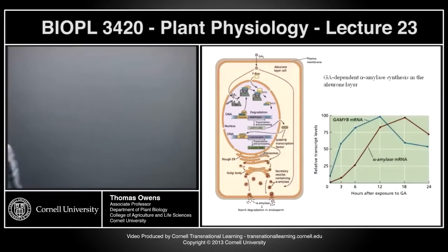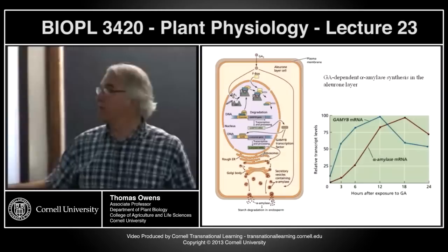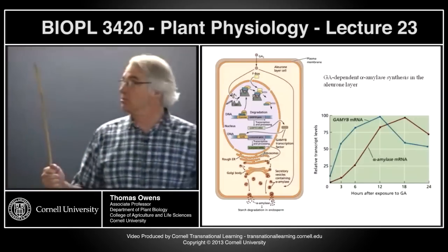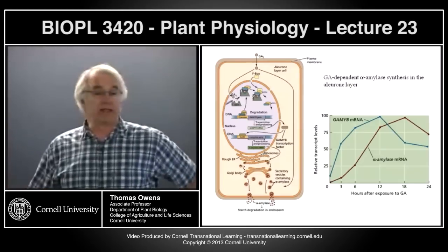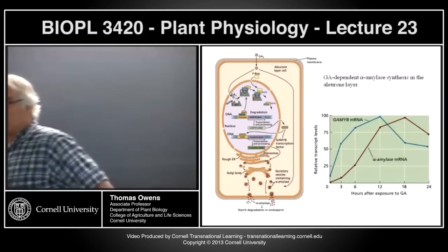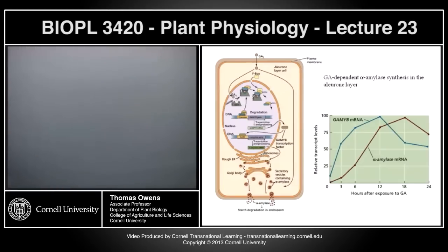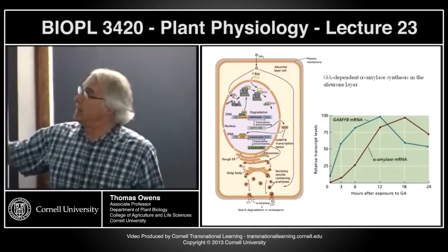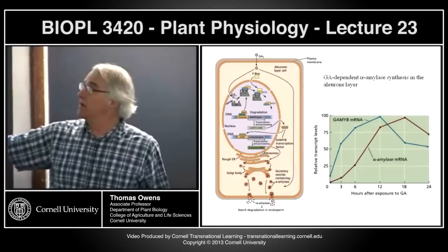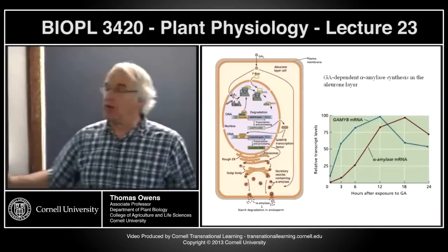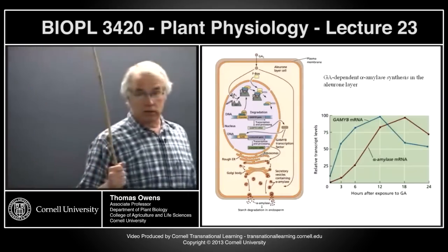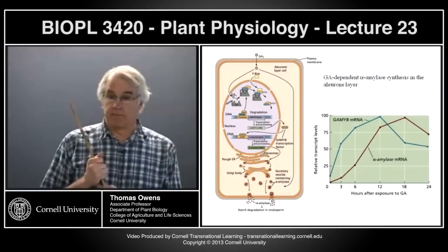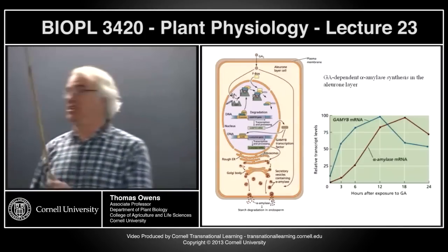Your textbook has a diagram that summarizes the role of the DELLA protein as a negative regulator of transcription in GA-dependent gene expression. It also brings in the idea of early and late, or primary and secondary genes. In the absence of GA, the DELLA protein is bound to the GA-dependent promoters, and so transcription of those genes is inhibited.